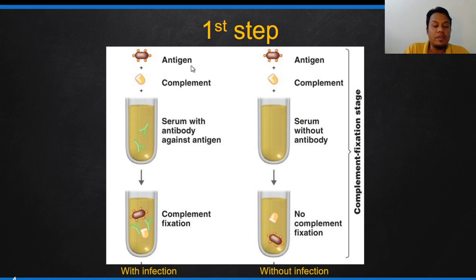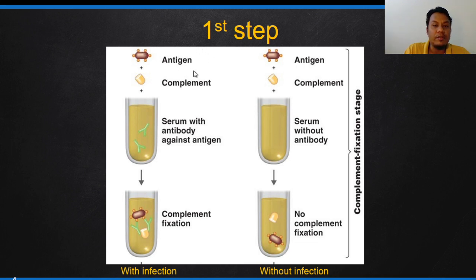For example, if the patient is suspected of suffering from syphilis, infection by Treponema pallidum, we need to have the organism of Treponema pallidum itself as an antigen. That means we need to breed or obtain the organism. Second, the complement — this complement is usually harvested from guinea pig.